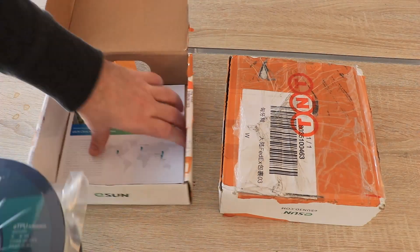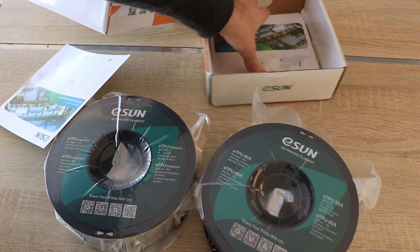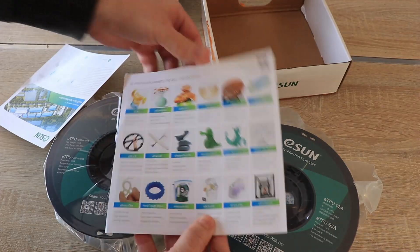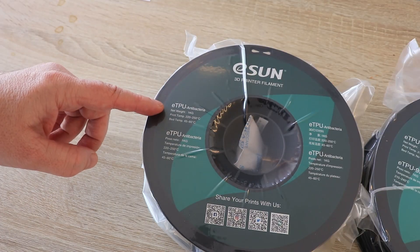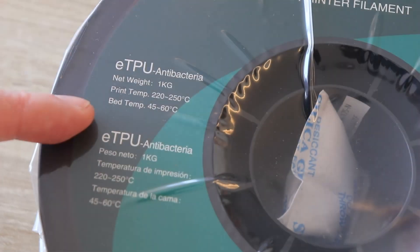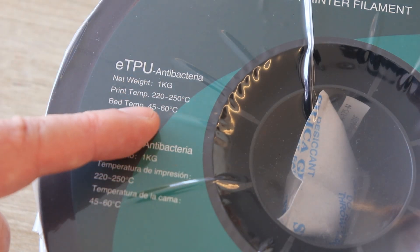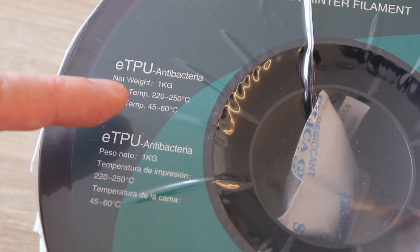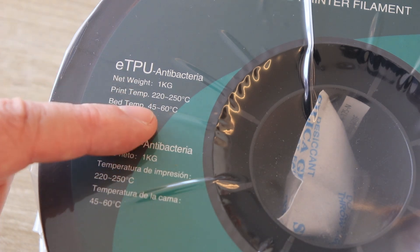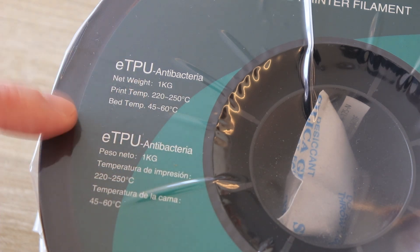Let's see content of the box. E-TPU antibacteria with printing temperature between 220 and 250 degrees Celsius and bed temperature between 45 and 60. I will start with the lowest temperature because TPU may stick too good to the PEI sheets.